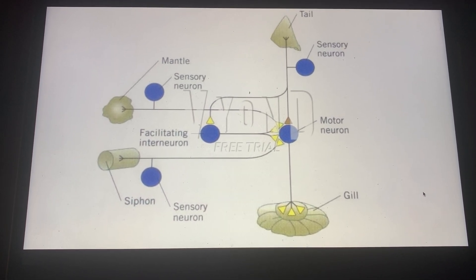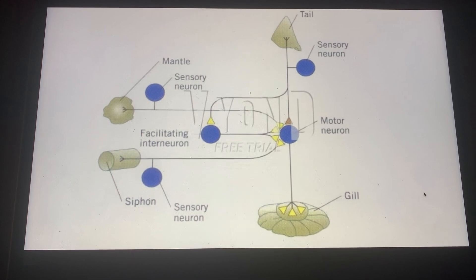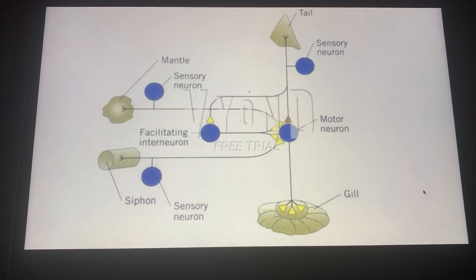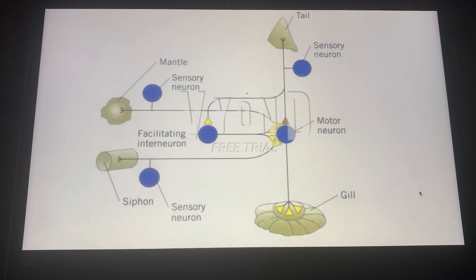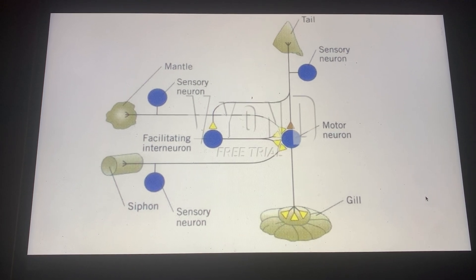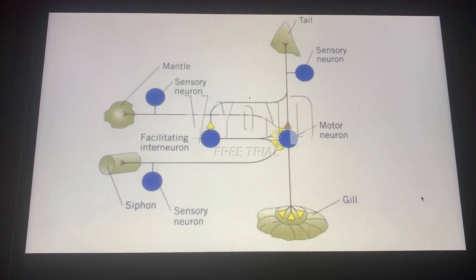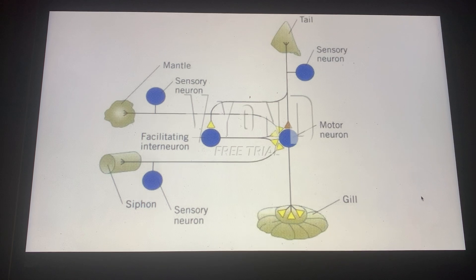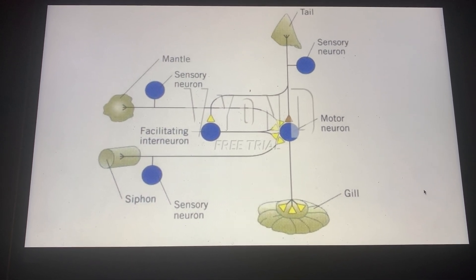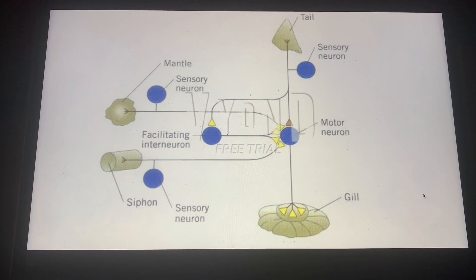So that's the sensitization molecular mechanism. This acts in a facilitating interneuron, which can act on the sensory neuron of the siphon or mantle, whatever is being touched. That overall implicates the interaction between the sensory neuron and the motor neuron. Now looking at the associative learning aspect.